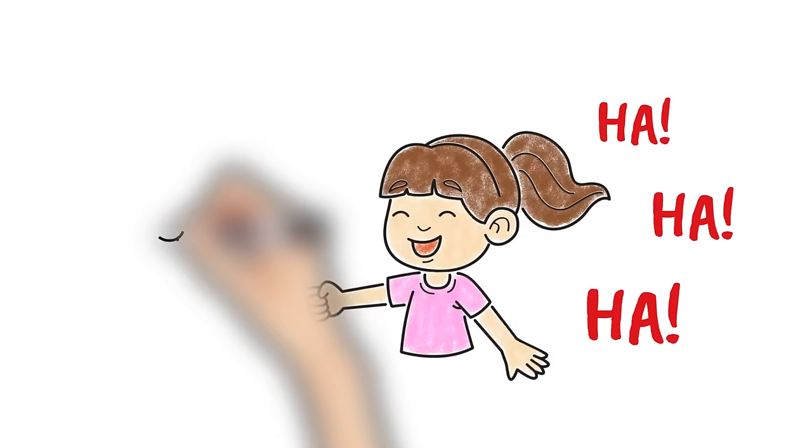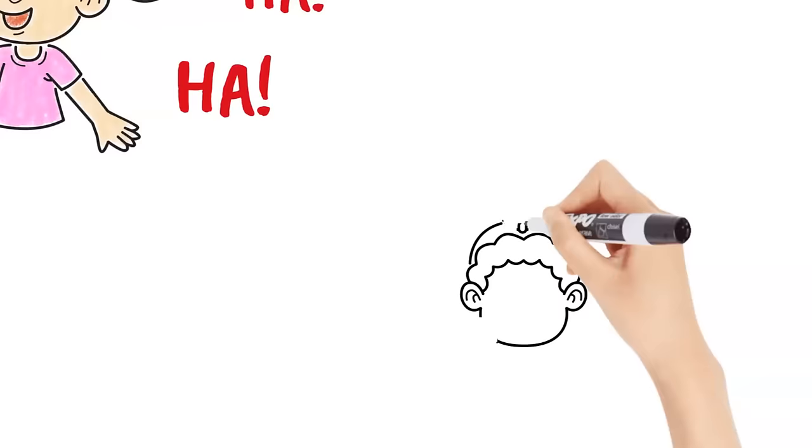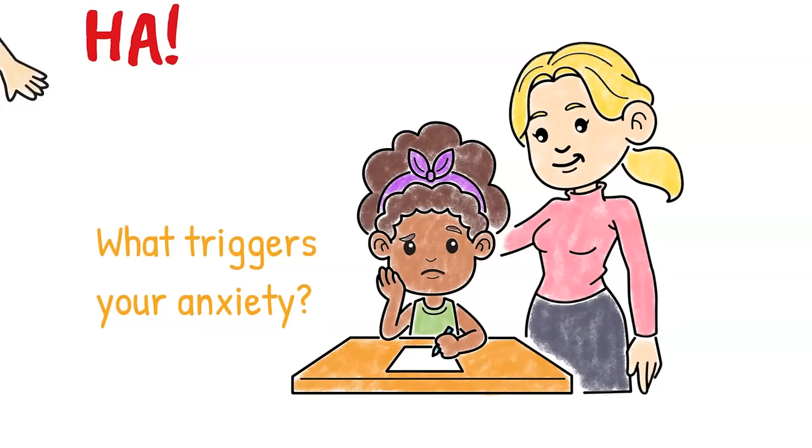It can be helpful to sit down with yourself, a parent, or a counselor to make a list of all the things that trigger your anxiety. Once you know your anxiety triggers, you can then start making plans to turn to coping skills when a trigger arises.